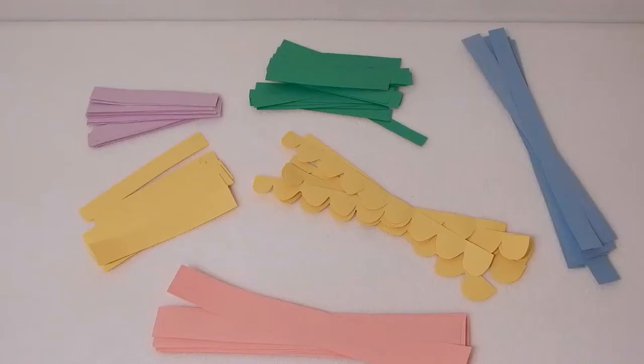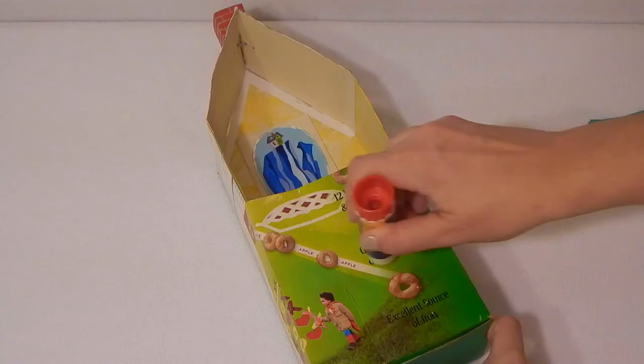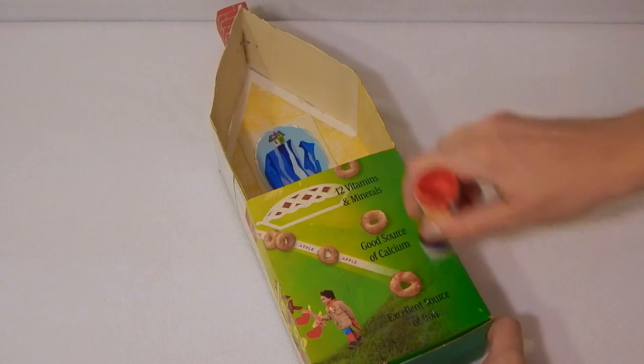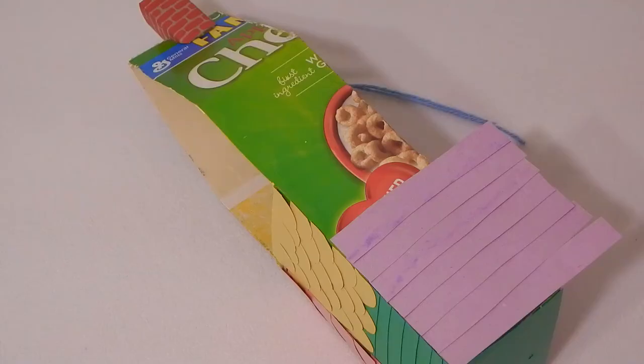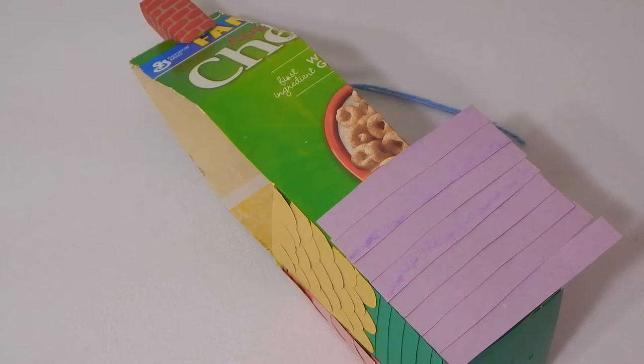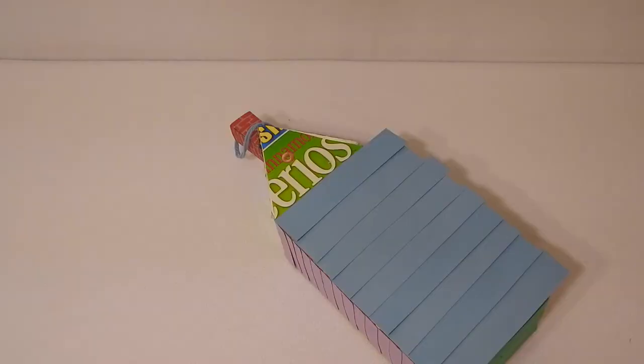Cut construction paper to create fancy trim and siding for the outside of your house. Apply glue and add details to the front, side, other side, and back of your house, trimming off the excess once the glue is dry.